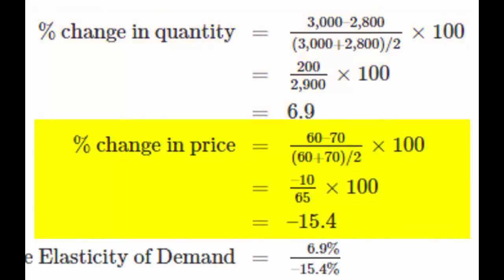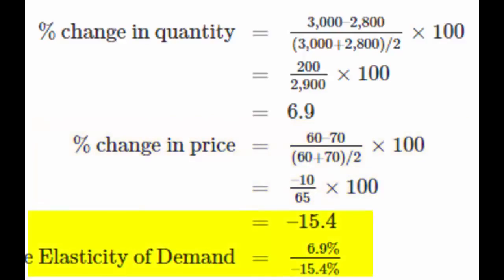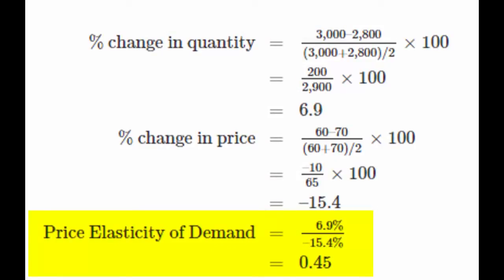Next, we calculate the percentage change in price. Note that we divide the denominator by 2 to average it and then multiply it by 100 to convert it to a percentage. Our percentage change in price is negative 15.4%. Finally, we calculate the price elasticity of demand coefficient. That gives us a price elasticity of demand coefficient of negative 0.45. Note that for price elasticity, we take the absolute value of the coefficient and drop the negative sign, so our price elasticity of demand coefficient becomes 0.45.